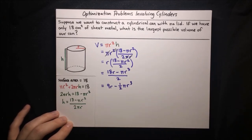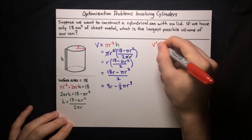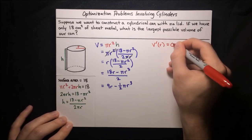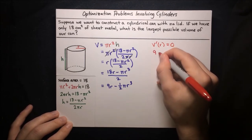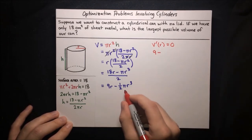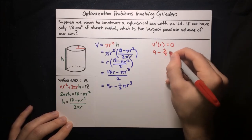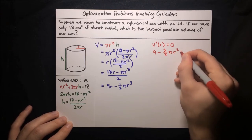That's our volume function, and now we want to maximize it. We do that by finding the stationary points — where the derivative V prime of r is equal to zero. Taking the derivative: the derivative of 9r is 9, and applying the power rule to minus one-half pi r cubed gives minus three-halves pi r squared. Setting that equal to zero.